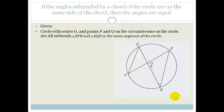This one says that if you have two angles, let's say for example Q and P, if they're subtended by the same chord, for example AB, then they are equal.